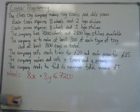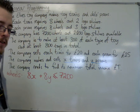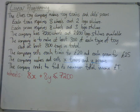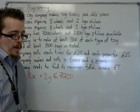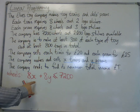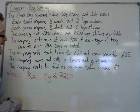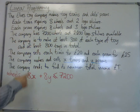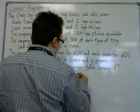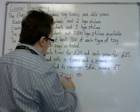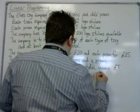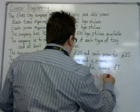This inequality can be simplified down, and it is most likely that you would be asked to simplify it. So you can divide all through by eight, and you get x plus y is less than or equal to 900.